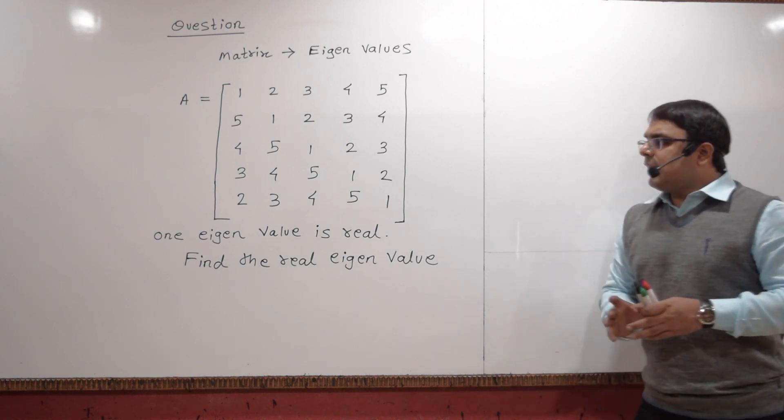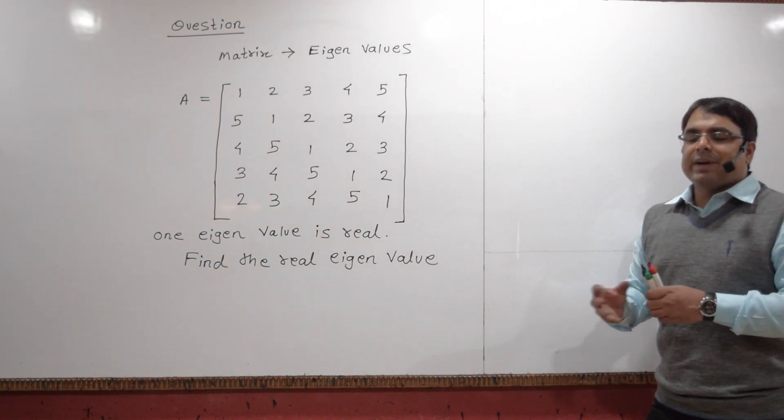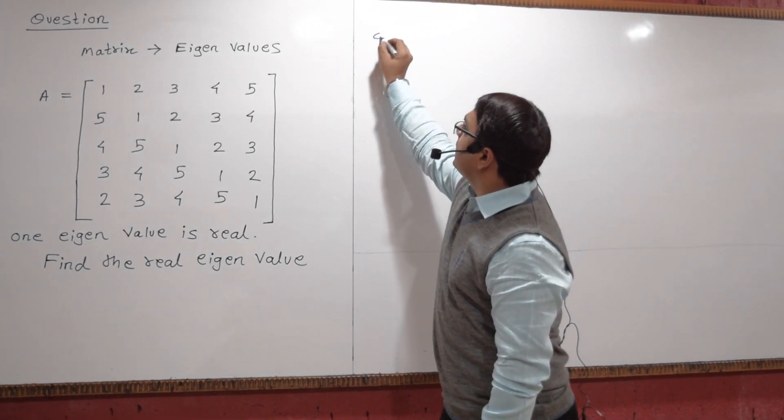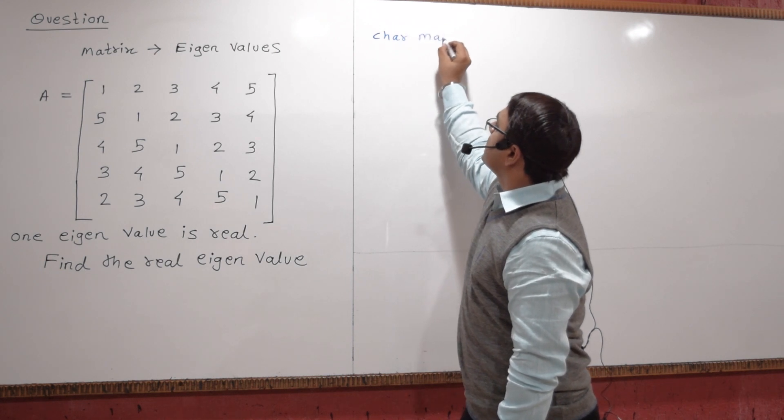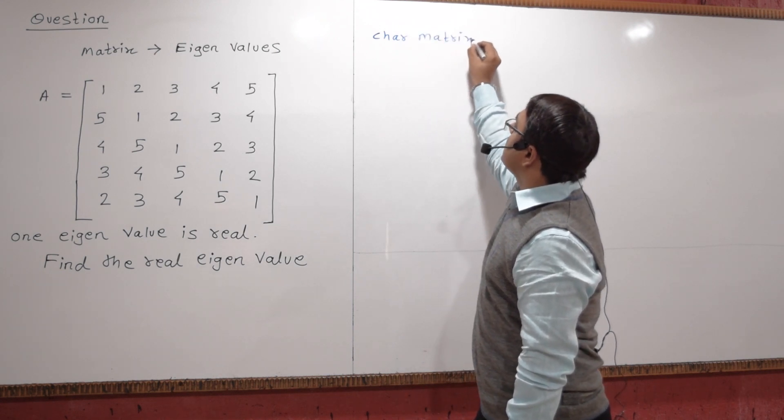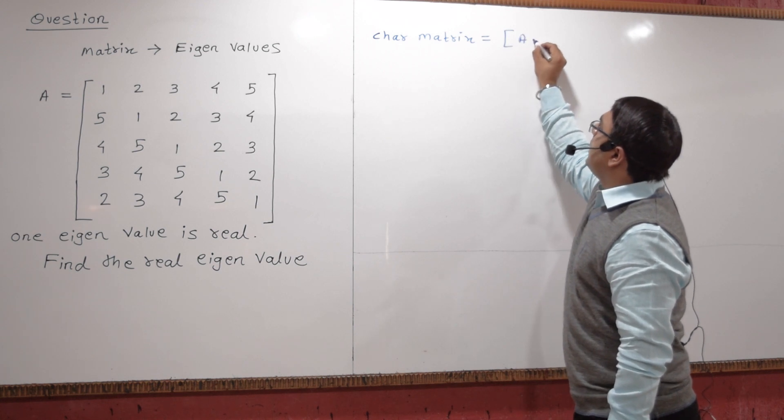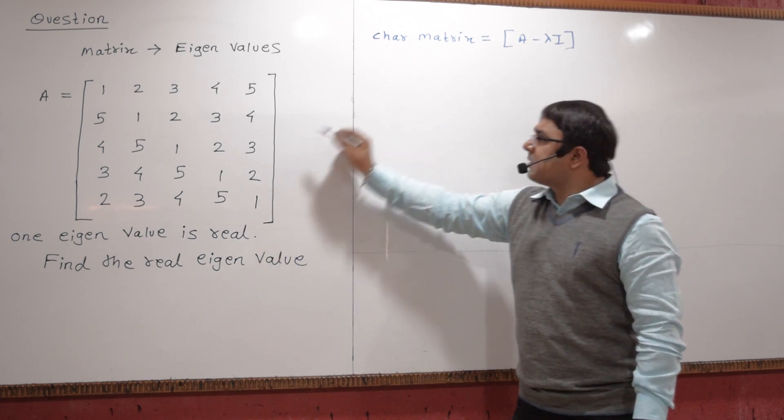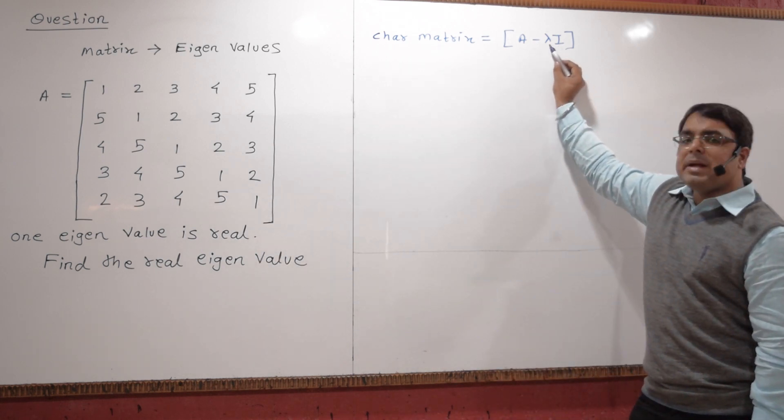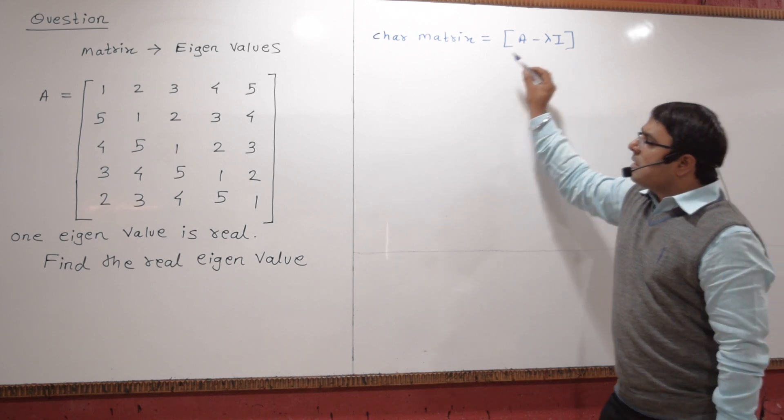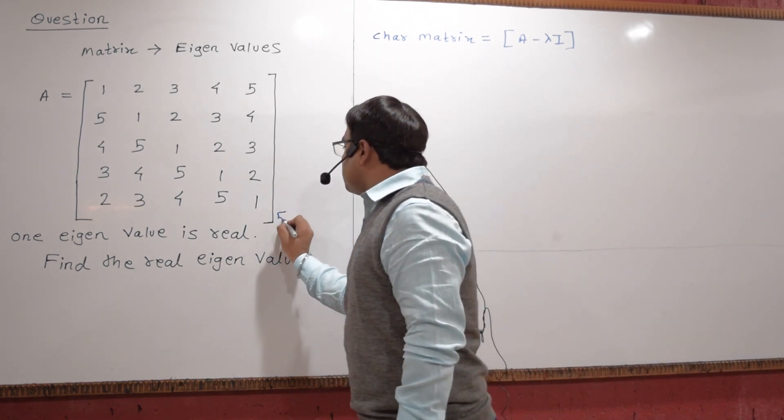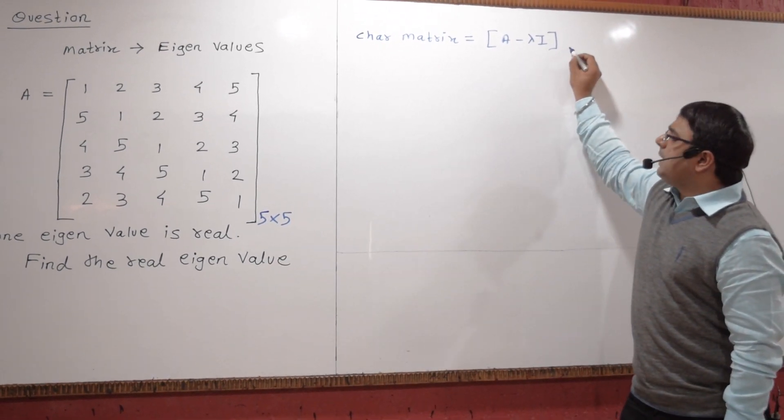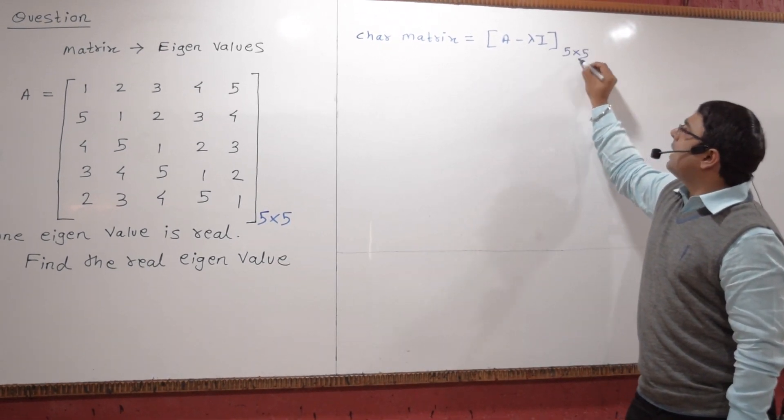For this, we can use a basic concept of eigenvector. First of all, we should know what is a characteristics matrix. The characteristics matrix is defined as matrix A minus lambda I. Matrix A is given to us, I will be identity matrix, lambda will be a scalar. Since the size of the matrix is 5 by 5, the size of the characteristics matrix will also be 5 by 5.